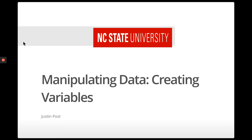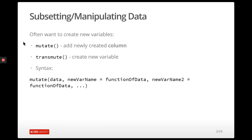This video covers the common task of creating variables. Oftentimes we want to create a new variable that is a function of our other variables in our data set. Within the tidyverse and the dplyr package, there are two functions that are really useful. One is the mutate function, which will add a newly created column to the tibble or data frame you're already working with, and then transmute, which will create a new variable in a separate tibble.